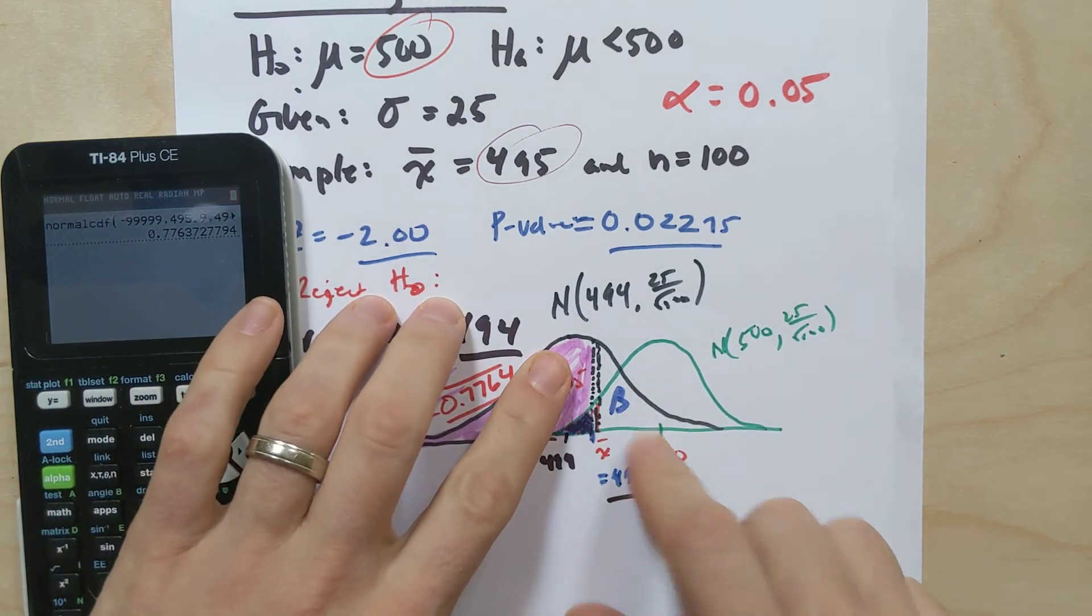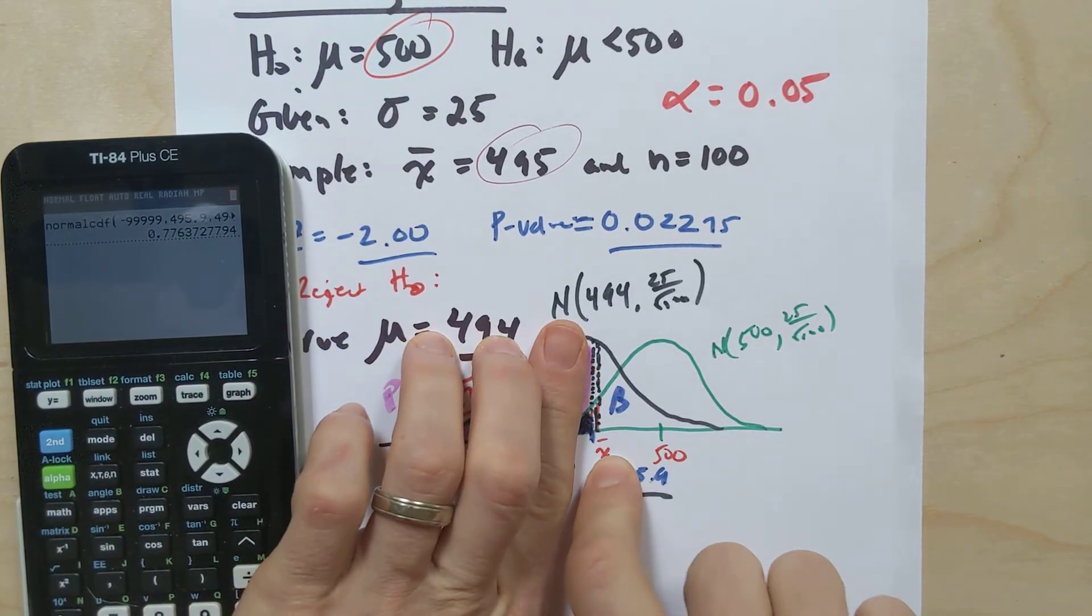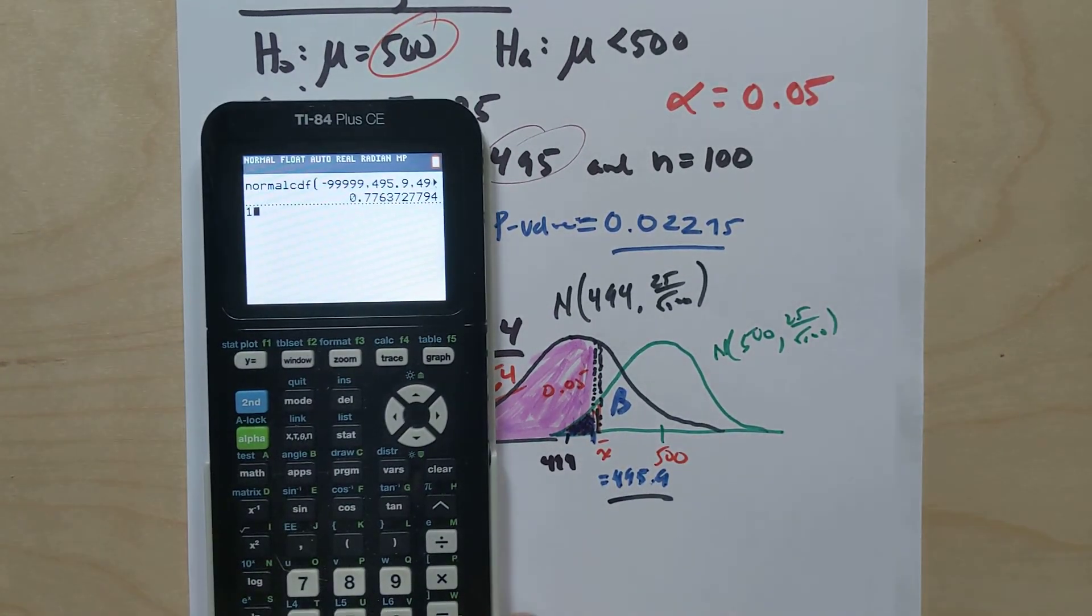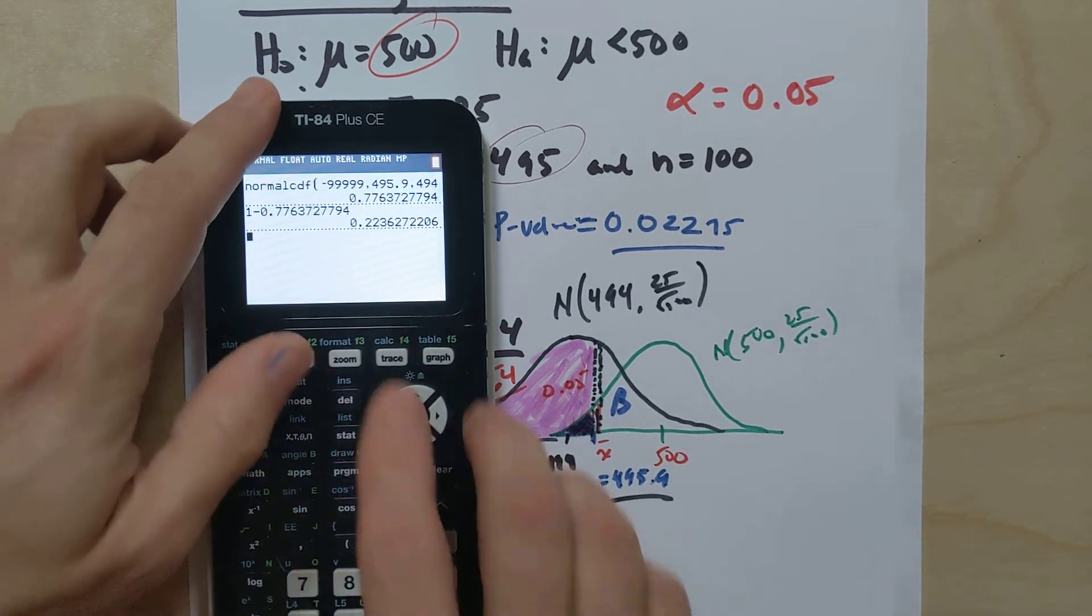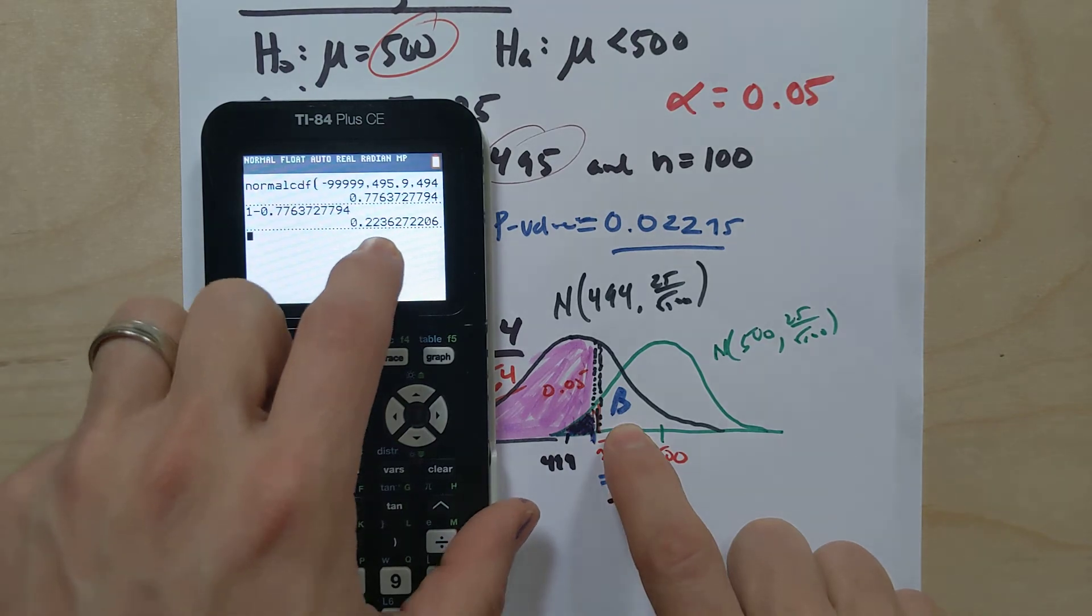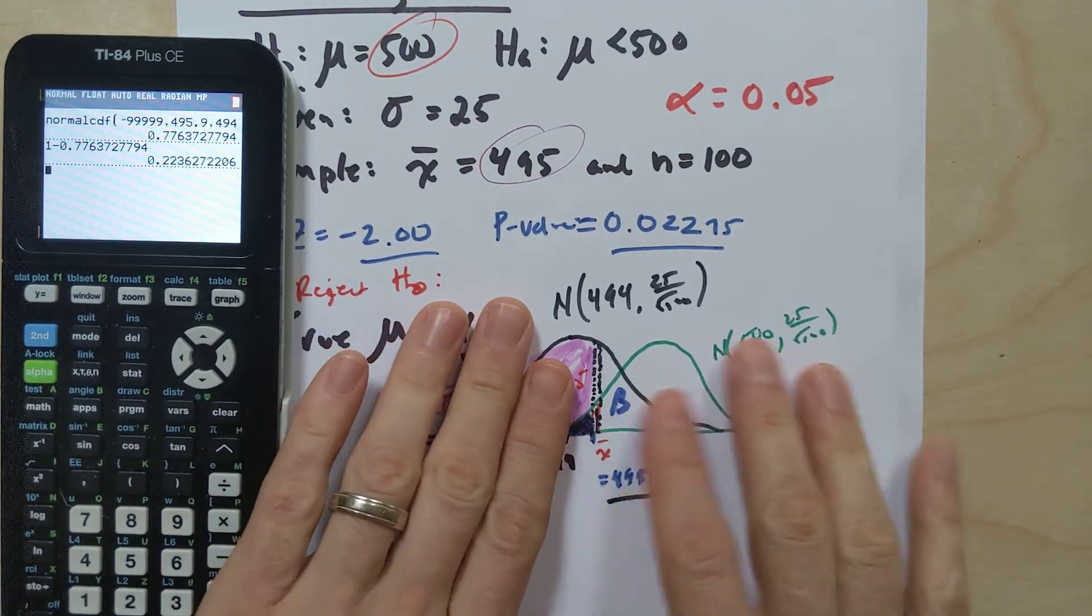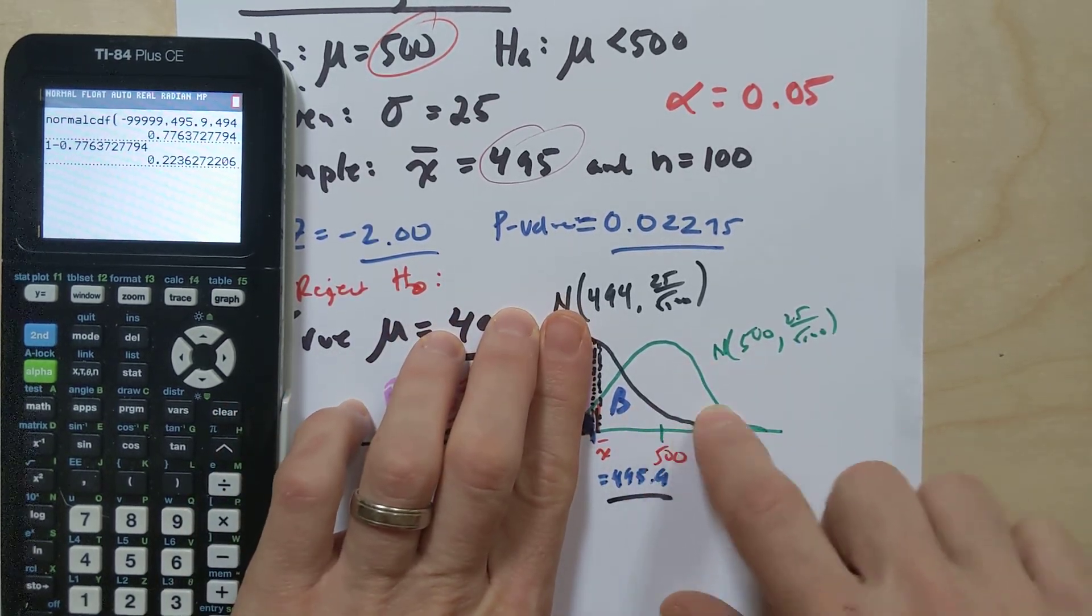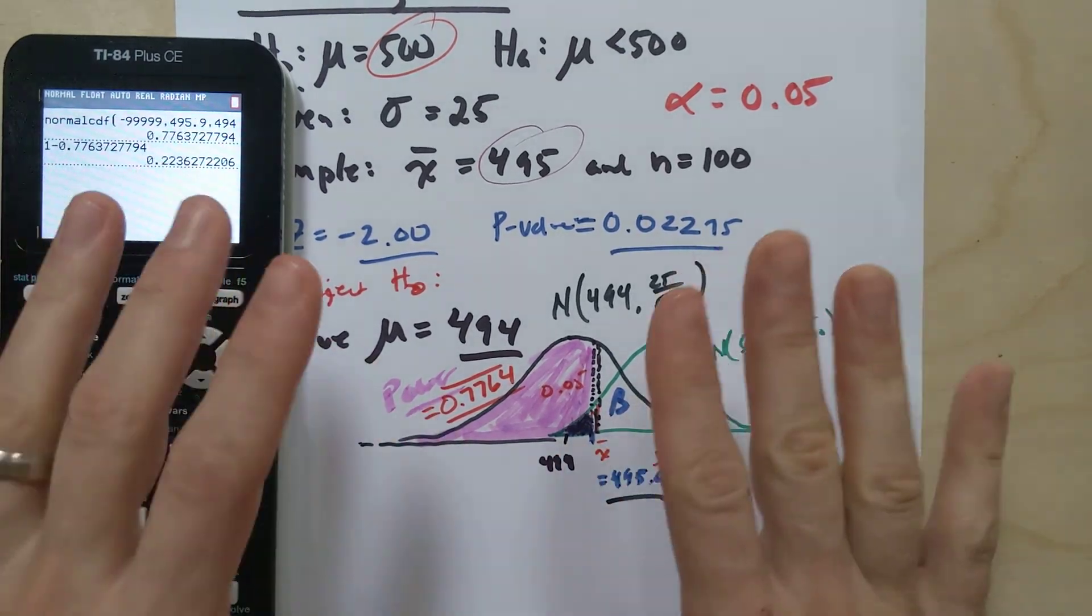Why is this beta over on this side? Well, in this situation, we would have gotten a sample mean that was bigger than what we wanted. And beta would have simply been one minus this guy. The beta would have been just 22.36%, right? There was a 22.36% chance that I would have failed to reject the null hypothesis just by chance, which would have been sad. In other words, getting some sample mean that was close to 500, when in reality, it should have been down here, right?